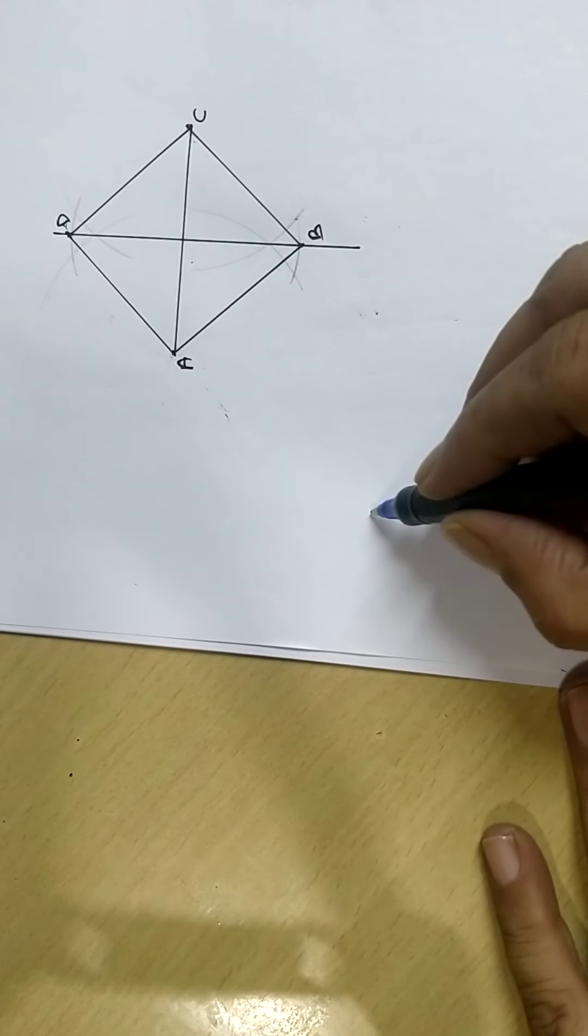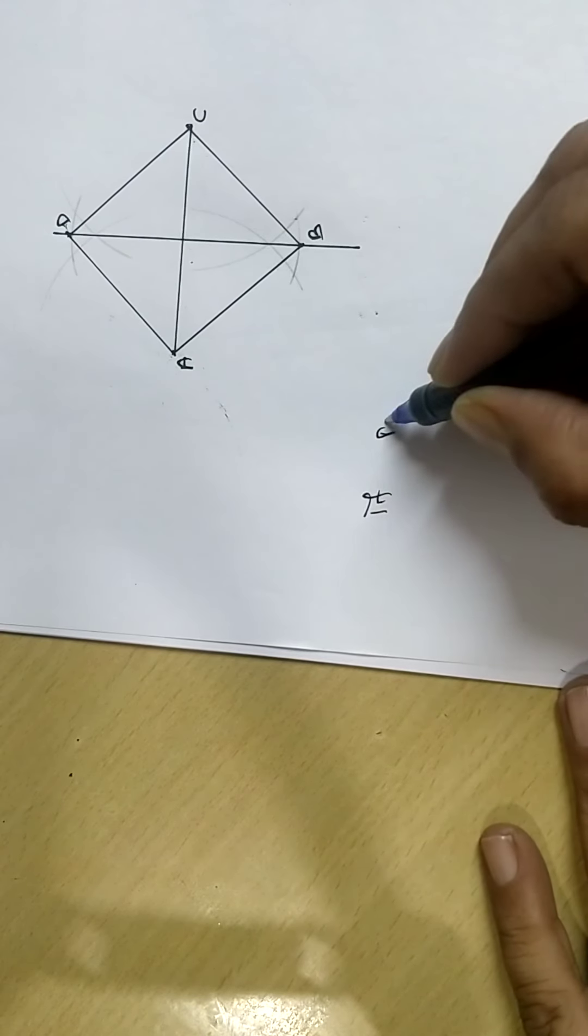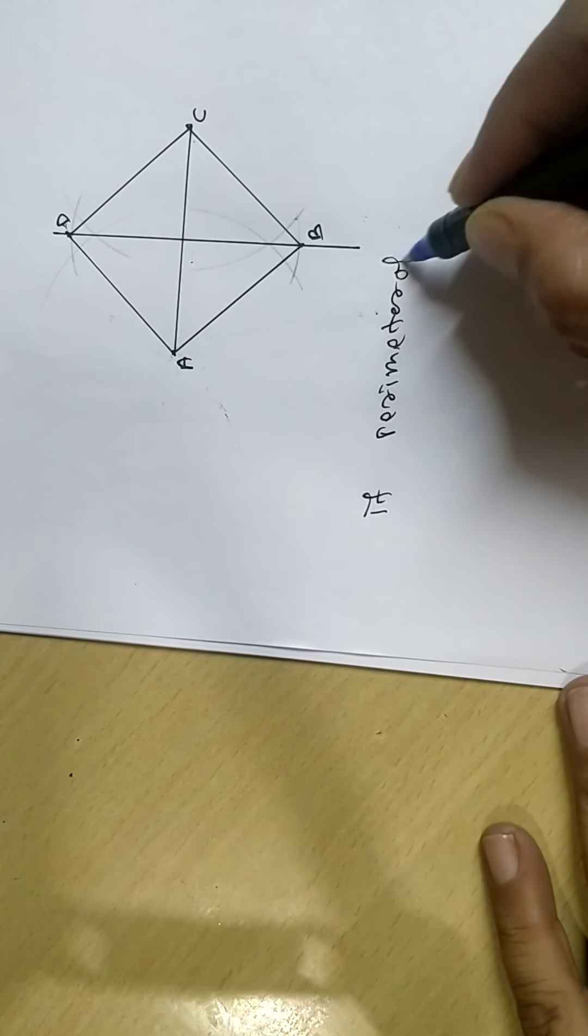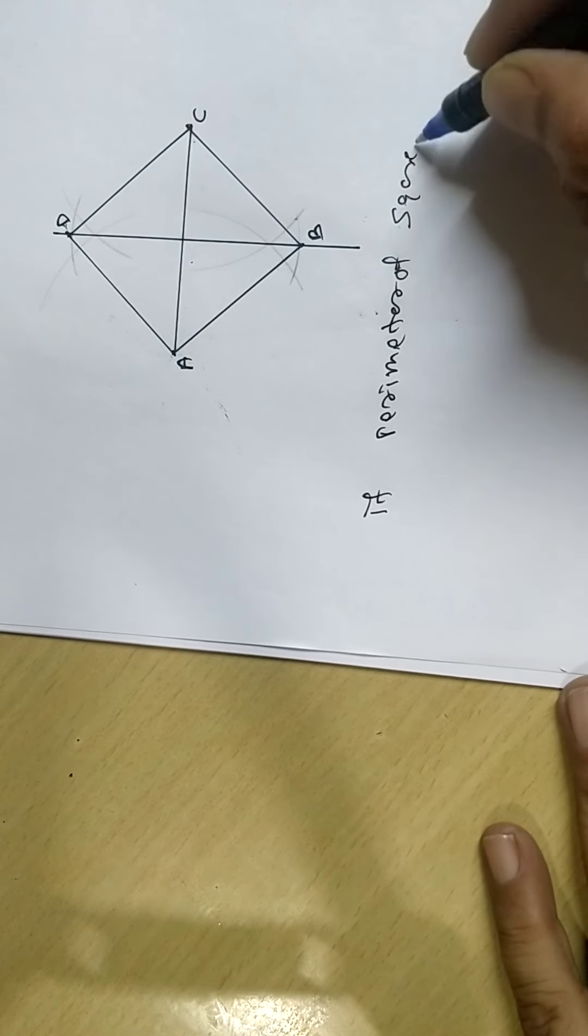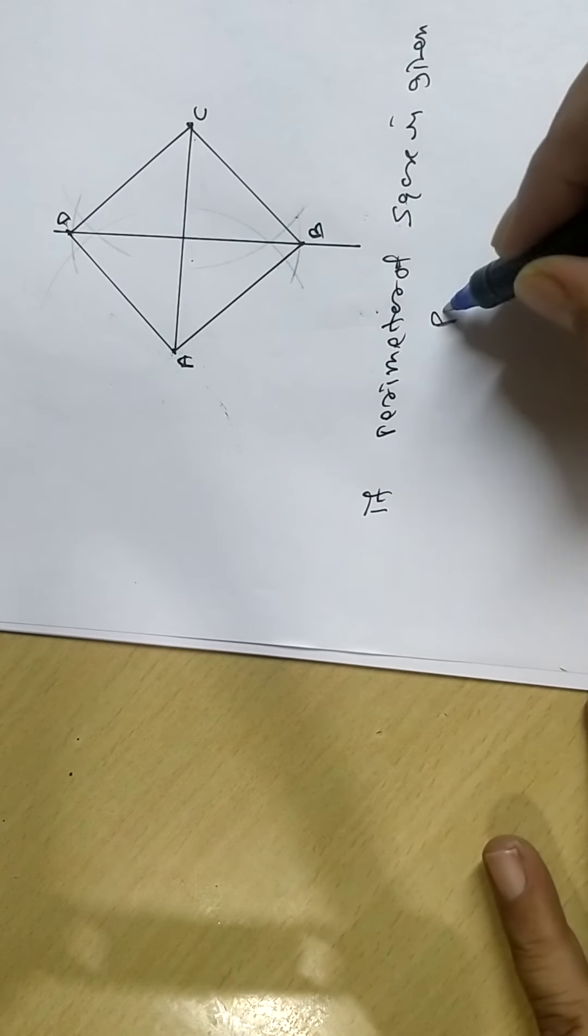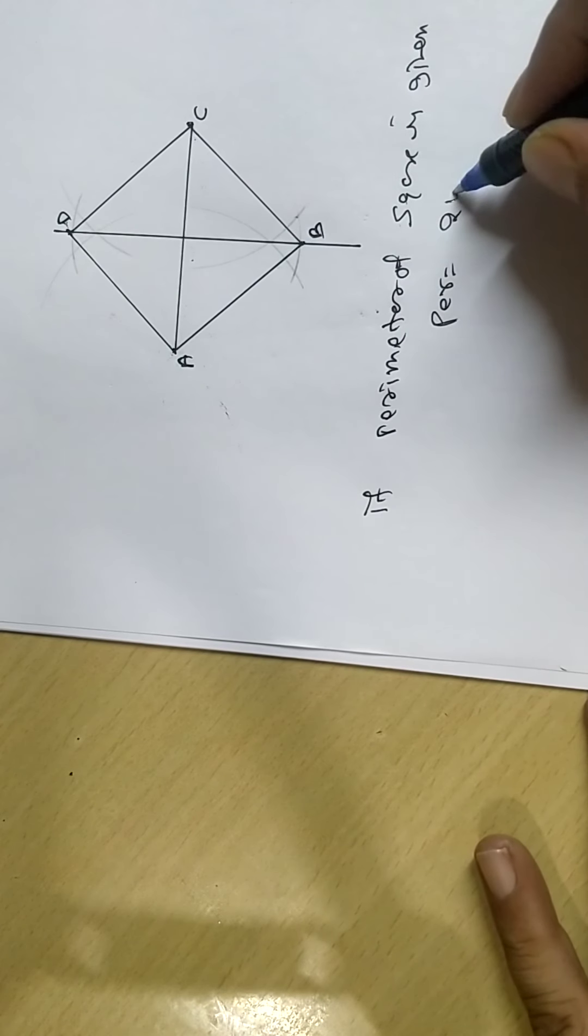If perimeter of square is given, simple. Suppose perimeter is 24 cm.